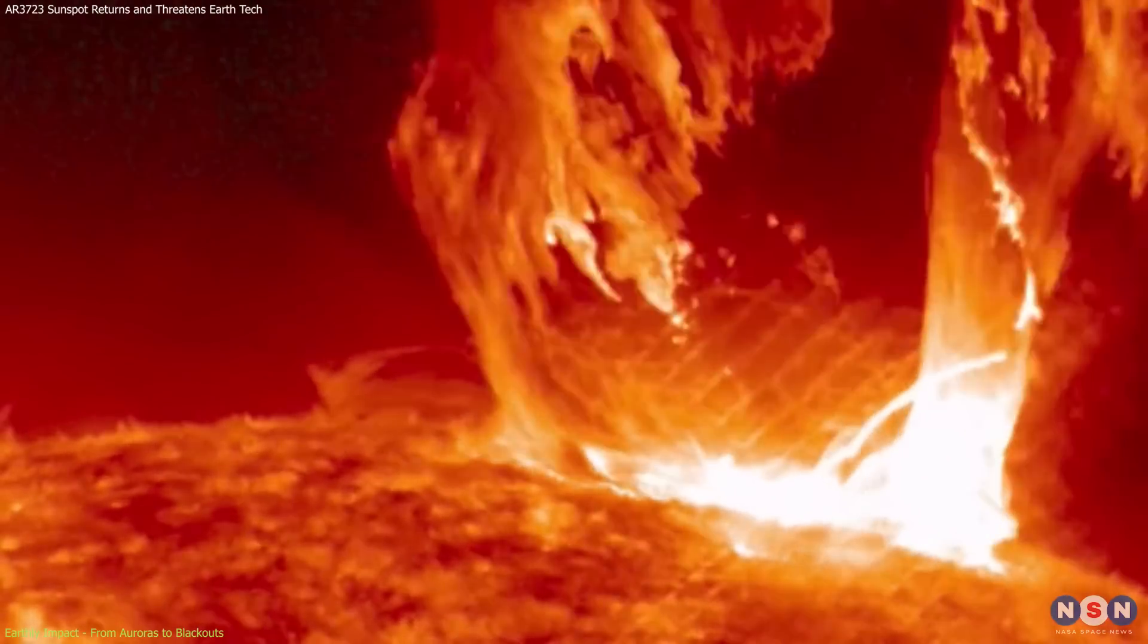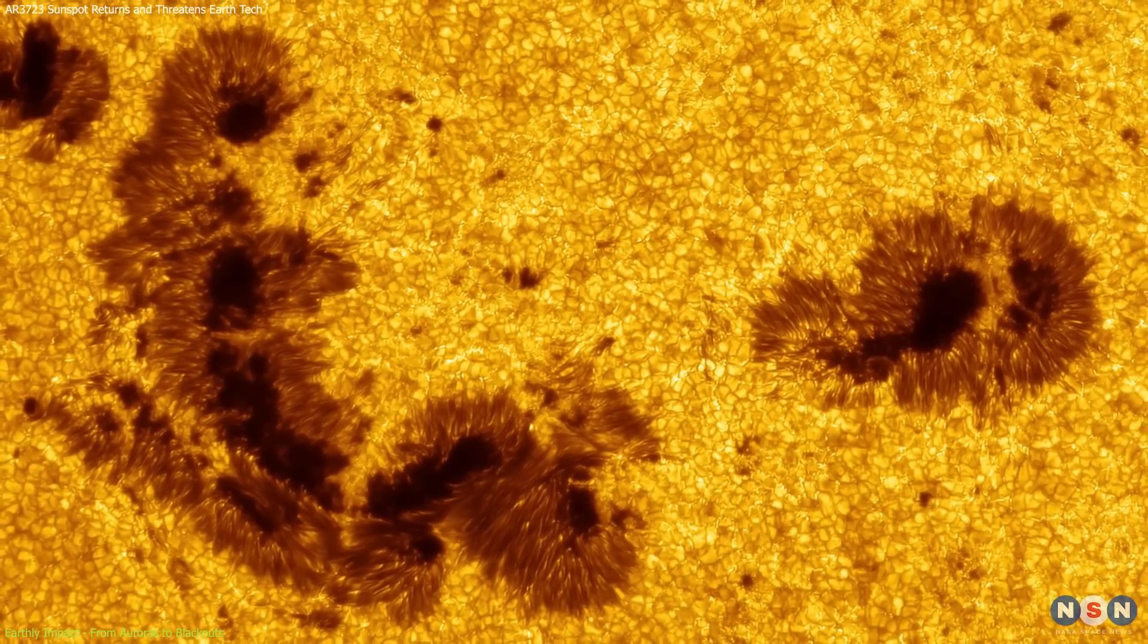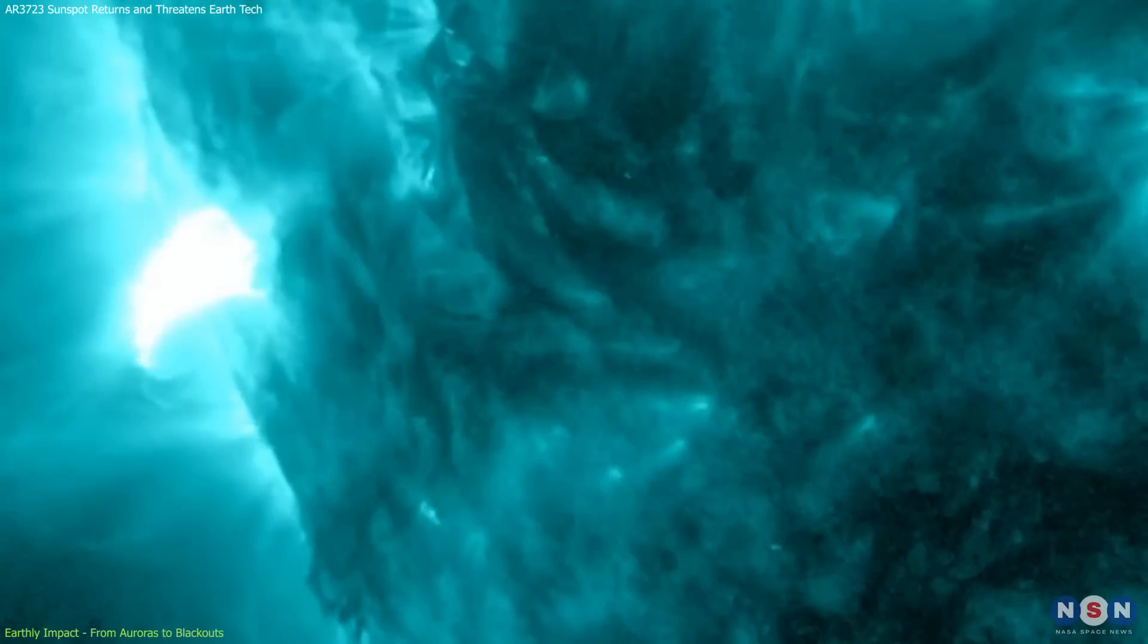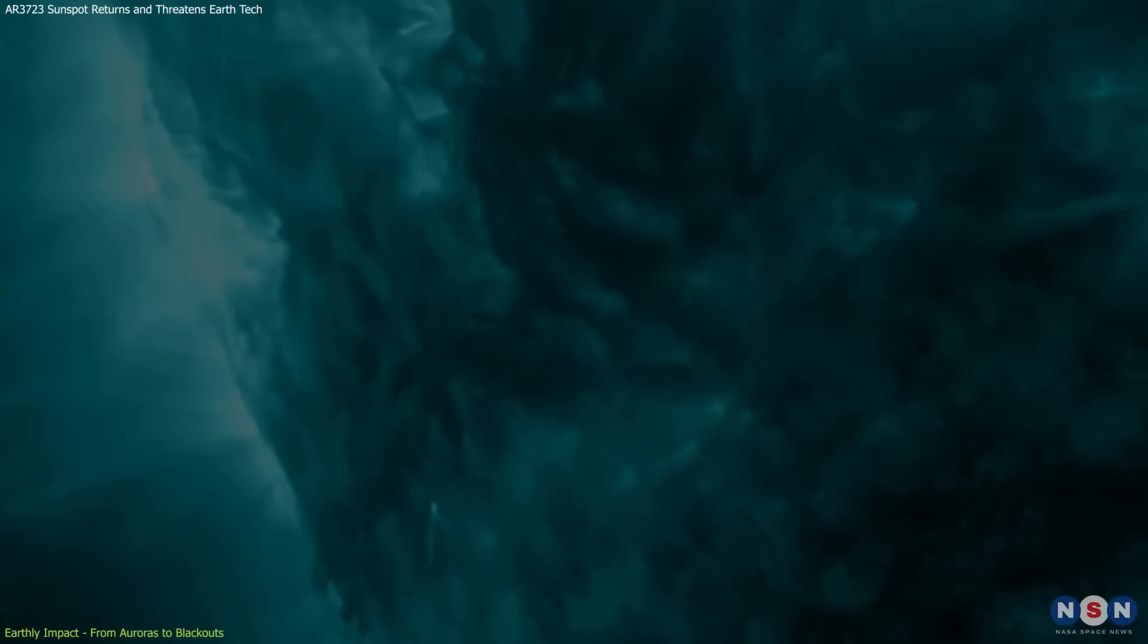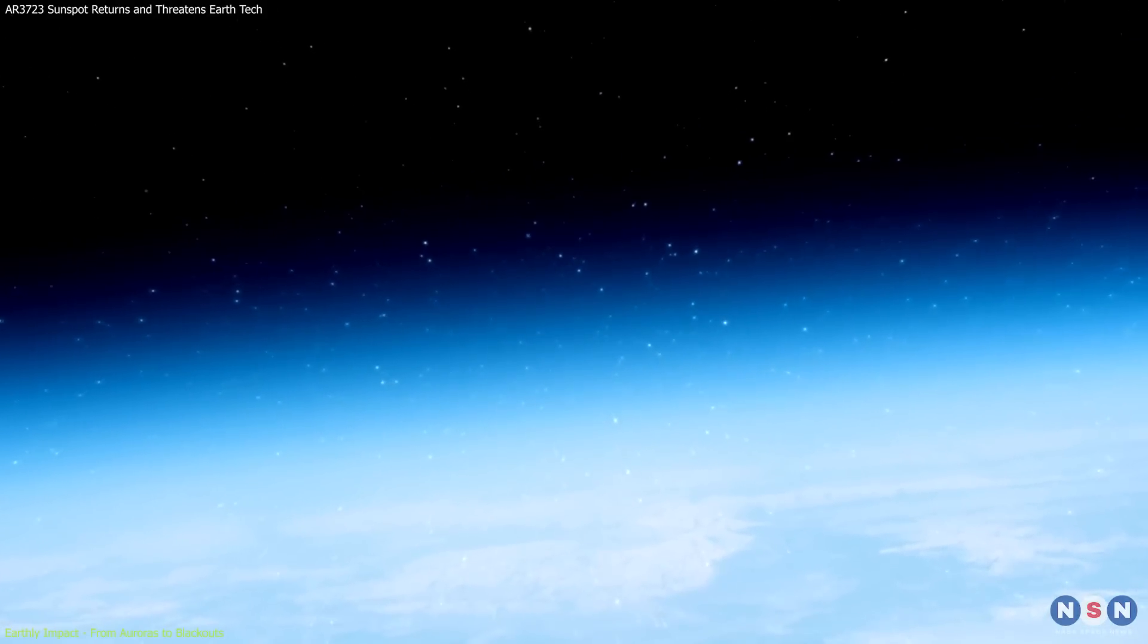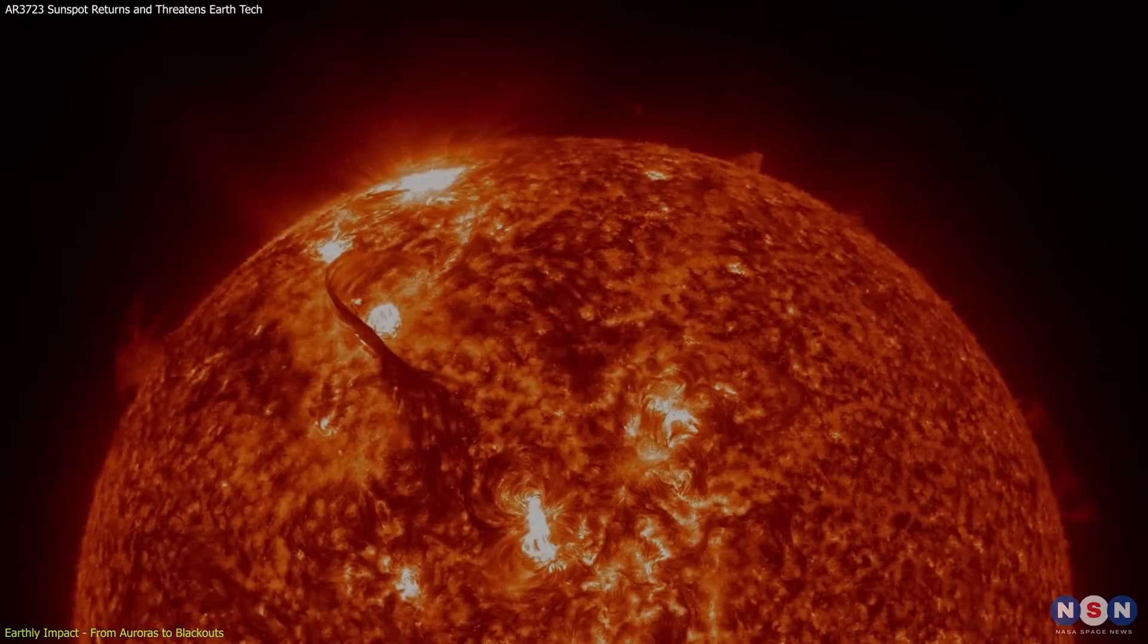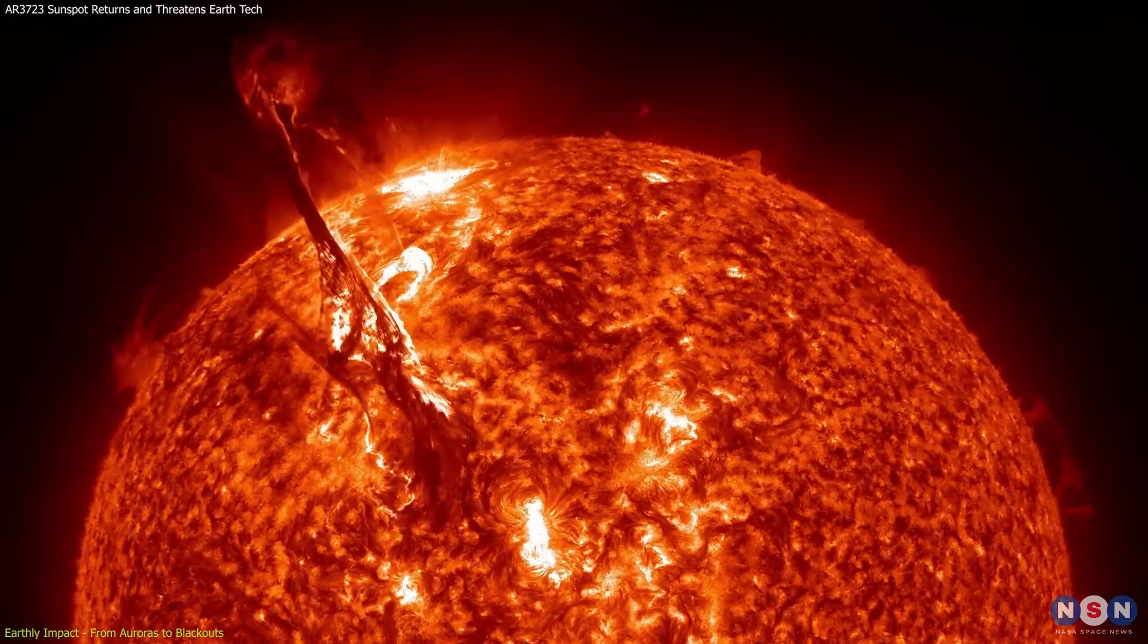Solar flares and coronal mass ejections from sunspots like AR 3723 profoundly affect Earth's technological and natural environments. The recent M9.3 class flare from this sunspot was almost an X-class solar flare. This intense activity releases ultraviolet radiation that ionizes the Earth's upper atmosphere, disrupting communication systems such as radio and GPS for hours. The energy emitted is immense, comparable to the detonation of millions of hydrogen bombs.